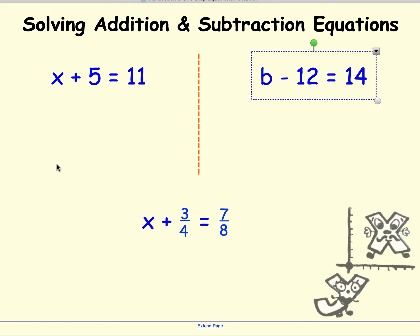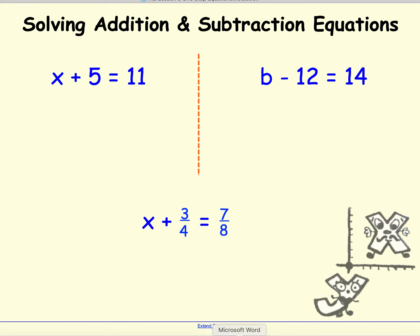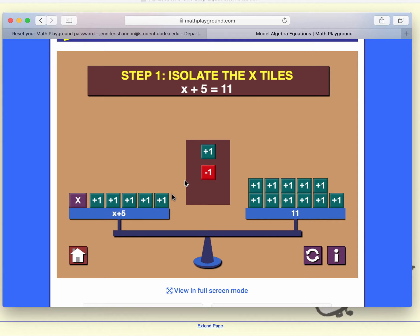Let's go ahead and do some problems. Our equation says a number x is being increased by 5, and the result is 11. We could use mental math, but we're trying to learn how to do this algebraically, because we're going to be expanding beyond simple number facts. So let's look at how this models on a picture. Here I have our equation set up, and you can see the scale is perfectly balanced. Whatever I do to one side, I have to do exactly to the other.